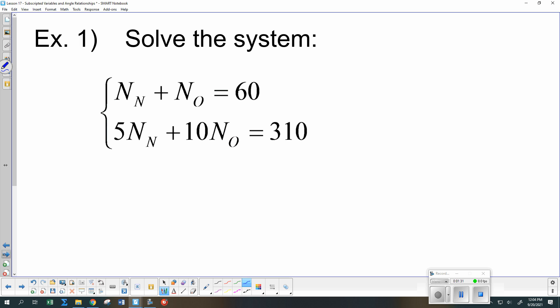So one thing that I might do, I might take either the NN or the NO equals 60 minus the other. What else could I do? Rachel? Elimination. And so if I wanted to do elimination, what might I do?